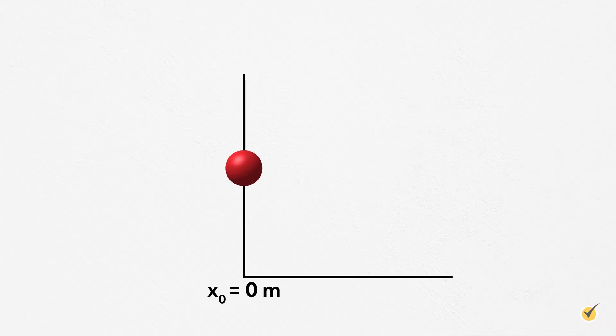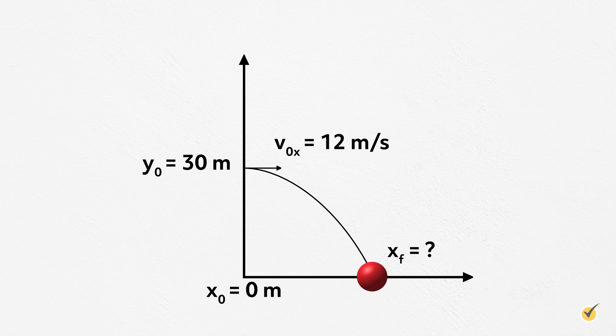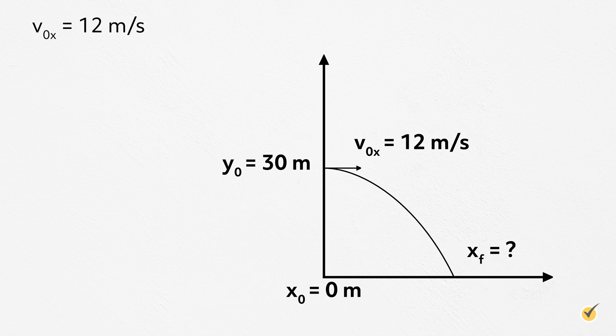Let's look at an example of one of the most common kinds of projectile motion problems. Imagine you kick a ball off a cliff at a speed of 12 meters per second. The ball goes straight along the ground until it is over the cliff, which is 30 meters high. How long does it take for the ball to land? How far away does the ball land?